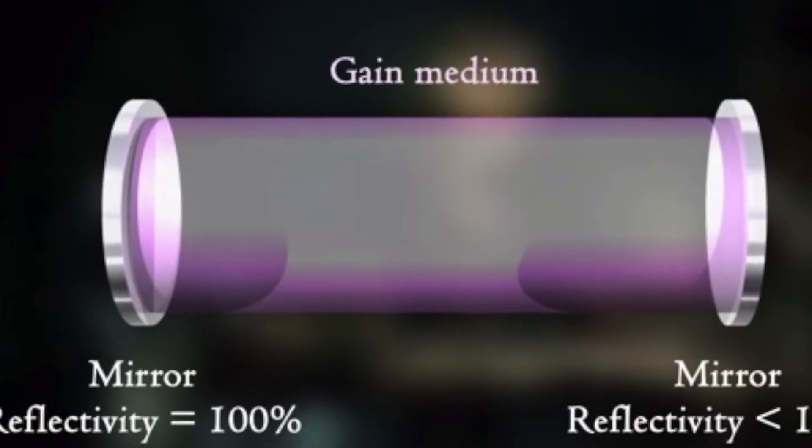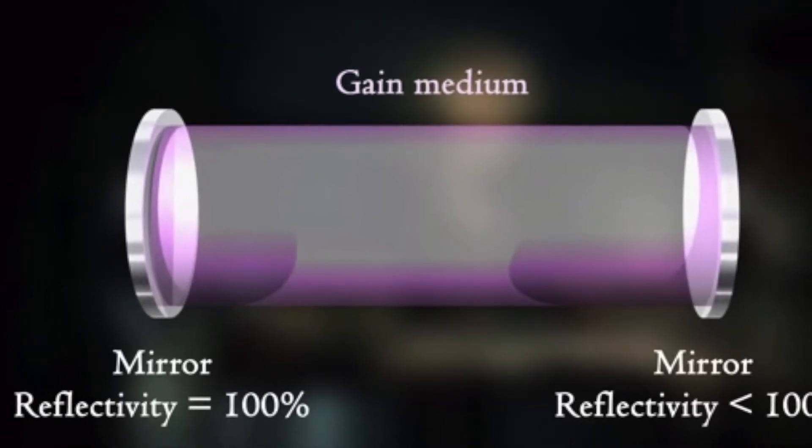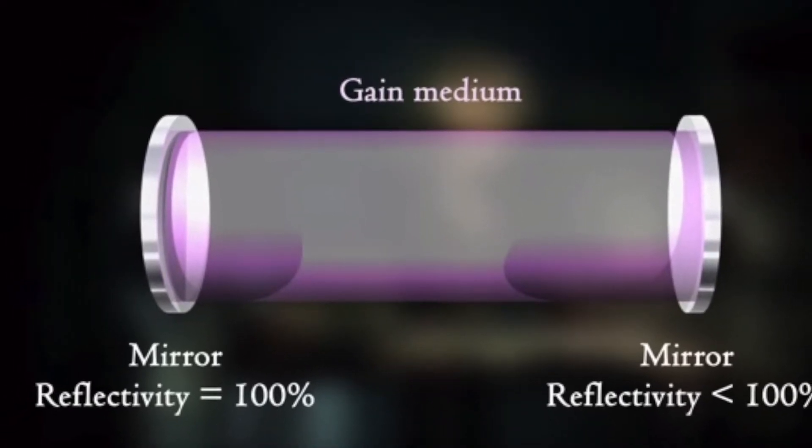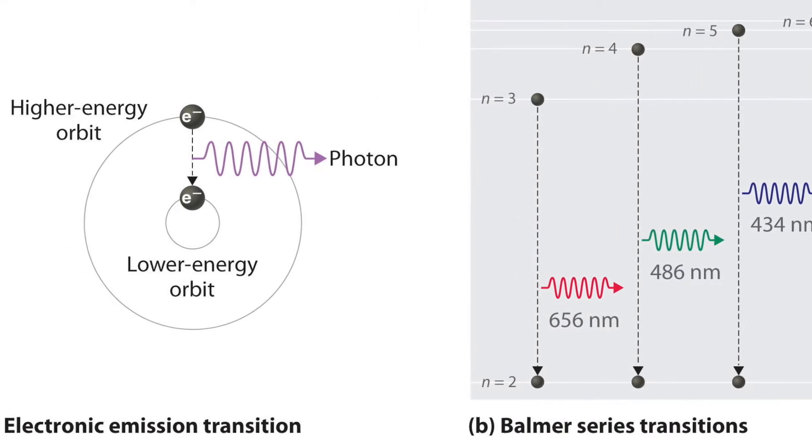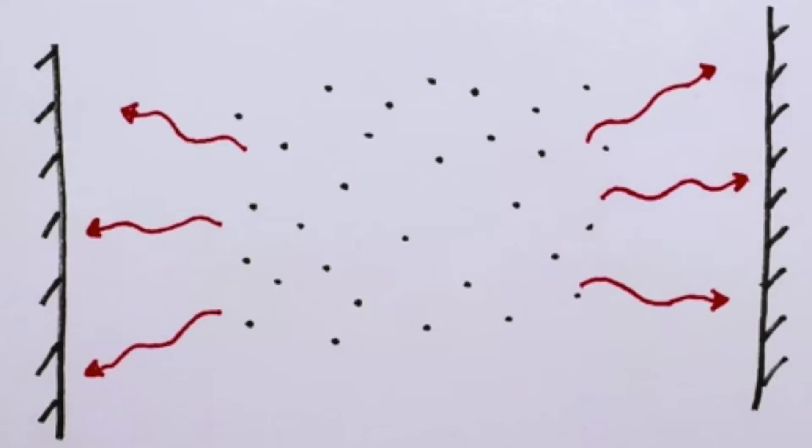Well, it starts with the use of two mirrors, a gain medium, and a light source. Light enters the gain medium and excites the atoms inside to a higher state. After a while, the atom will drop back down to the original state and emit a photon.